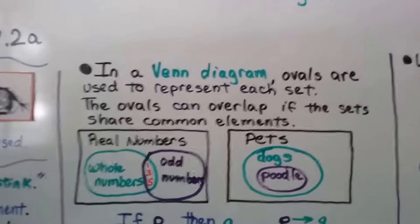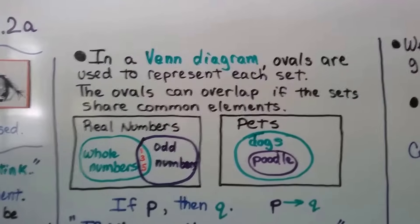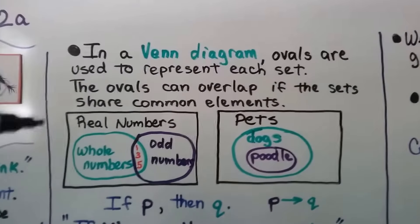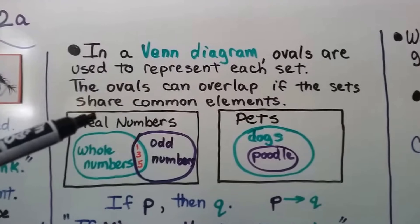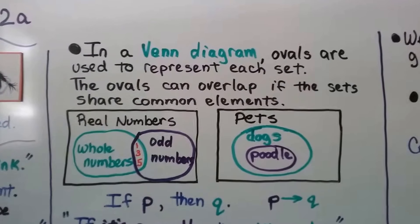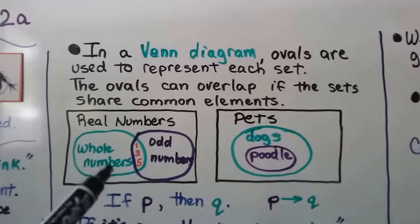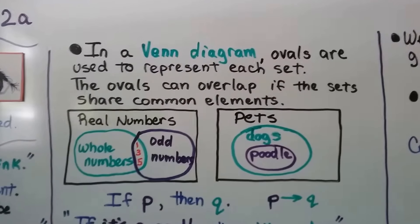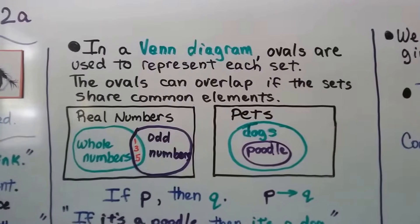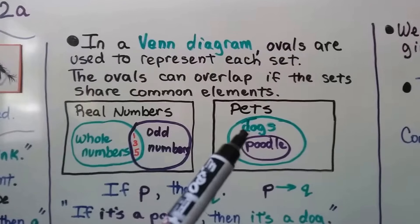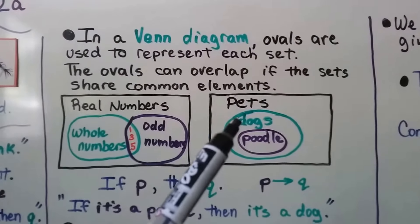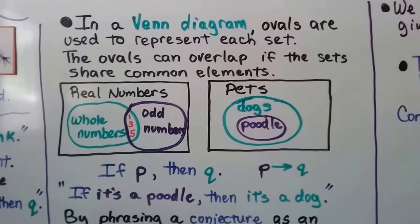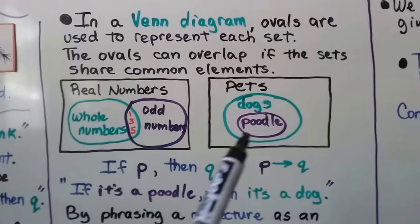In a Venn diagram — we learned about this in middle school — ovals are used to represent each set, and the ovals can overlap if the sets share common elements. Here we have a set of real numbers. Inside the set of real numbers, we have whole numbers and odd numbers. Whole numbers and odd numbers overlap because they share some same numbers: one, three, and five are odd numbers, but those are also whole numbers. For pets, we have a set of pets, and inside that set we have dogs, and inside that set we have poodles.